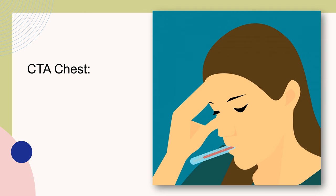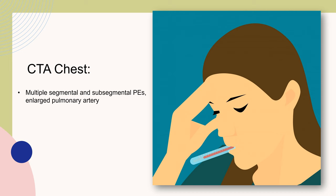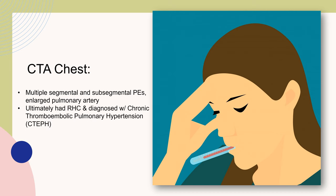Due to the abnormal findings on her POCUS exam, she ended up getting a CT angiogram of the chest, which showed multiple segmental and subsegmental pulmonary emboli and an enlarged pulmonary artery. A few weeks later, she had a right heart cath and additional studies, which ultimately diagnosed her with chronic thromboembolic pulmonary hypertension.